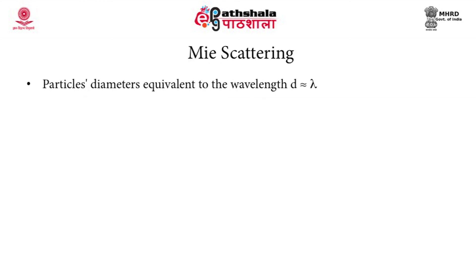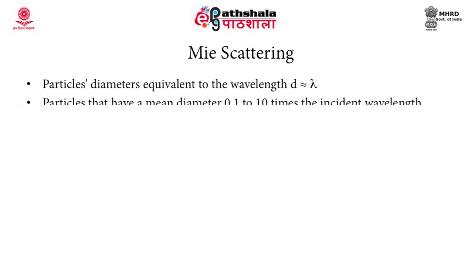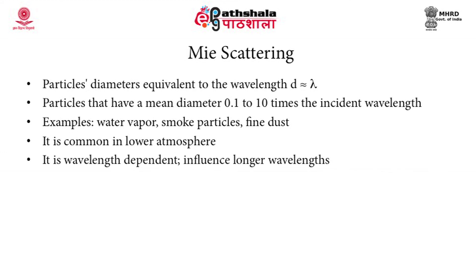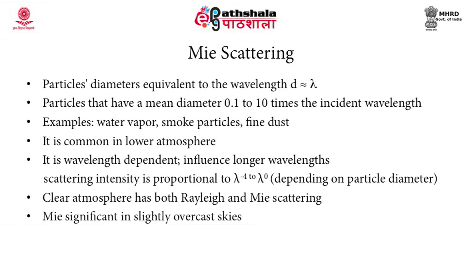The next type is Mie scattering. In this type, the diameter of the particles is more or less equivalent to the wavelength of the radiation. Particles with a mean diameter of 0.1 to 10 times the incident wavelength cause Mie scattering. Examples include water vapour, smoke particles, and fine dust. Mie scattering generally occurs in the lower atmosphere and is wavelength dependent, influencing longer wavelengths; the scattering intensity is inversely proportional to the fourth power of wavelength up to where it becomes independent of wavelength. Clear atmosphere has both Rayleigh and Mie scattering, while Mie scattering is significant in slightly overcast skies.